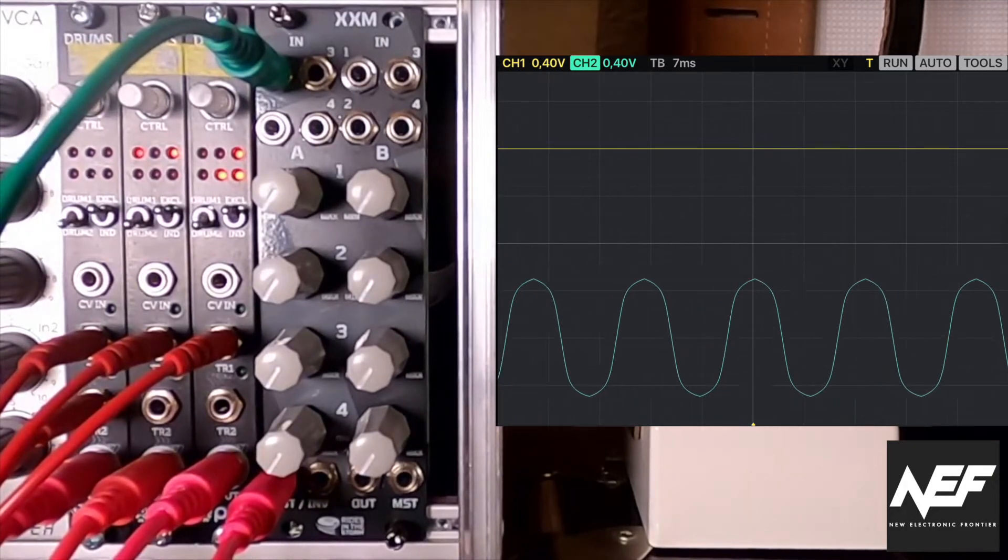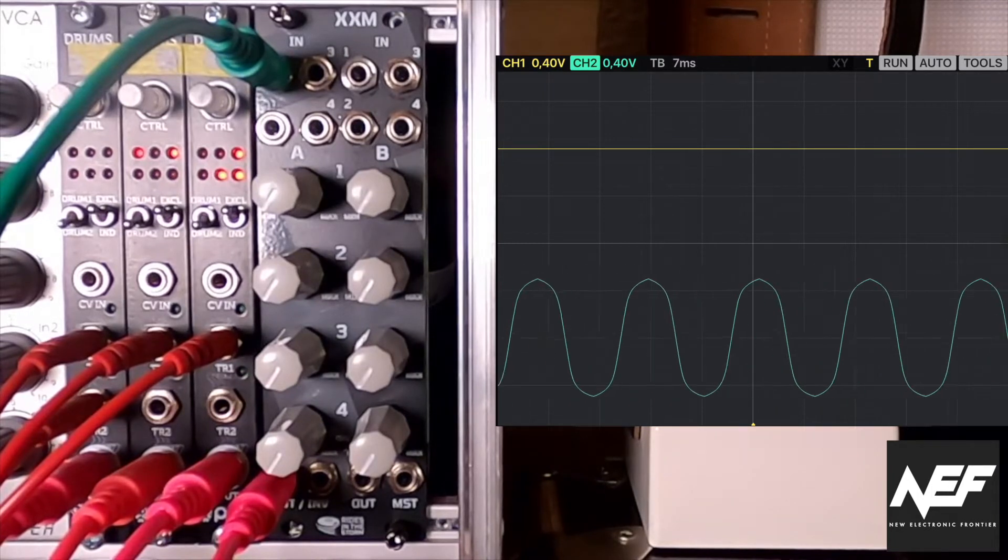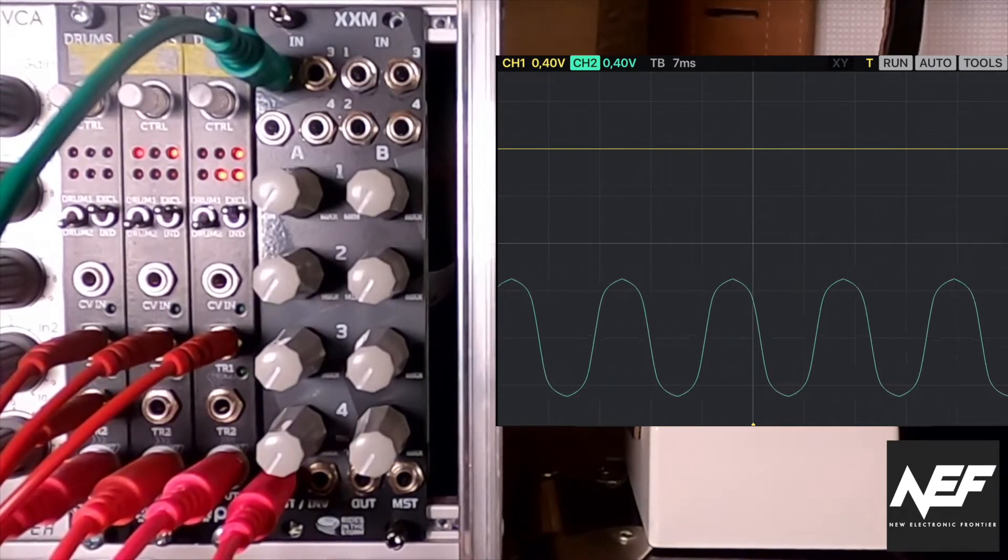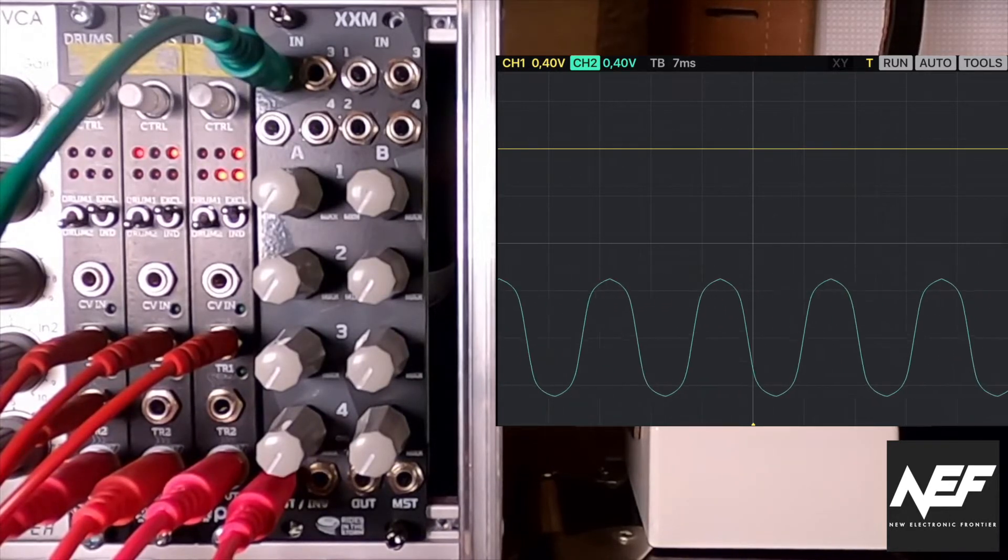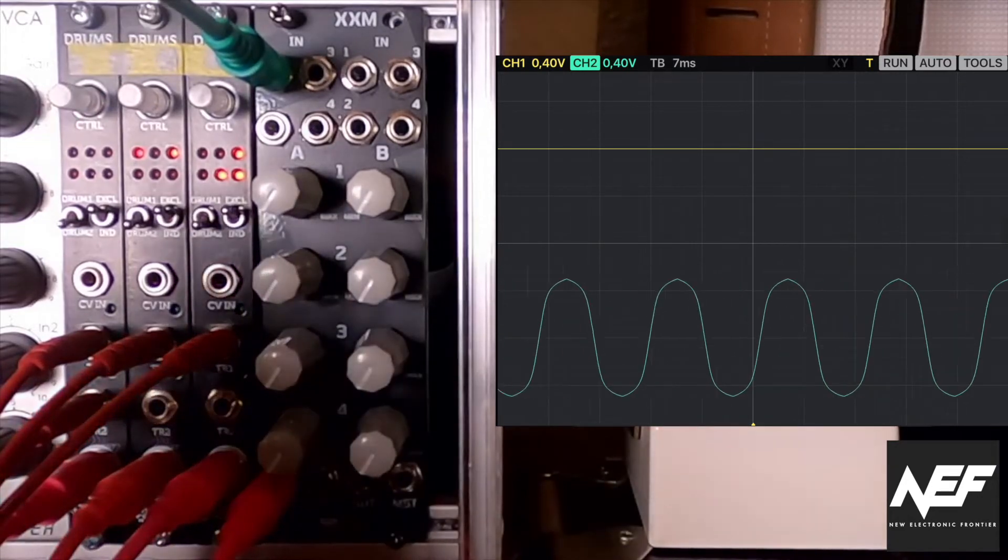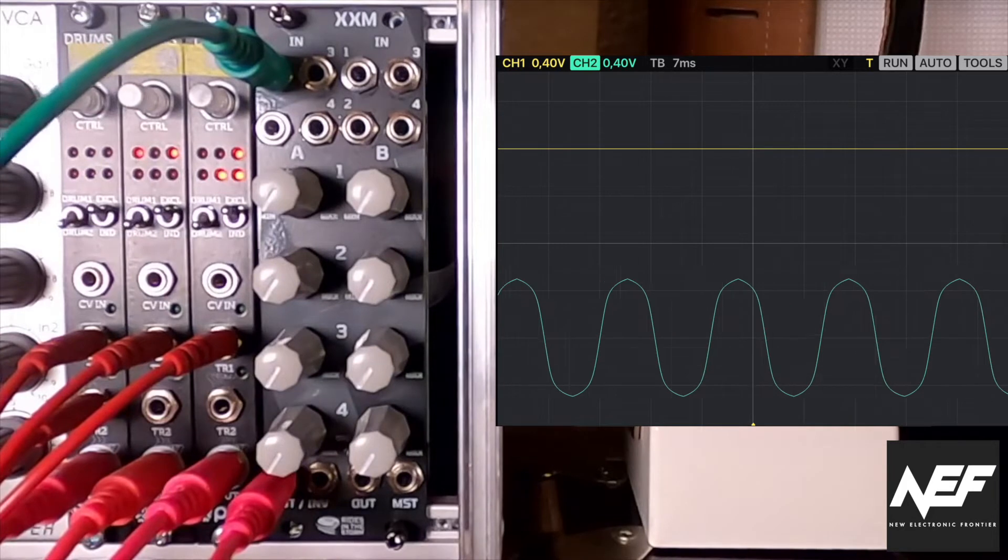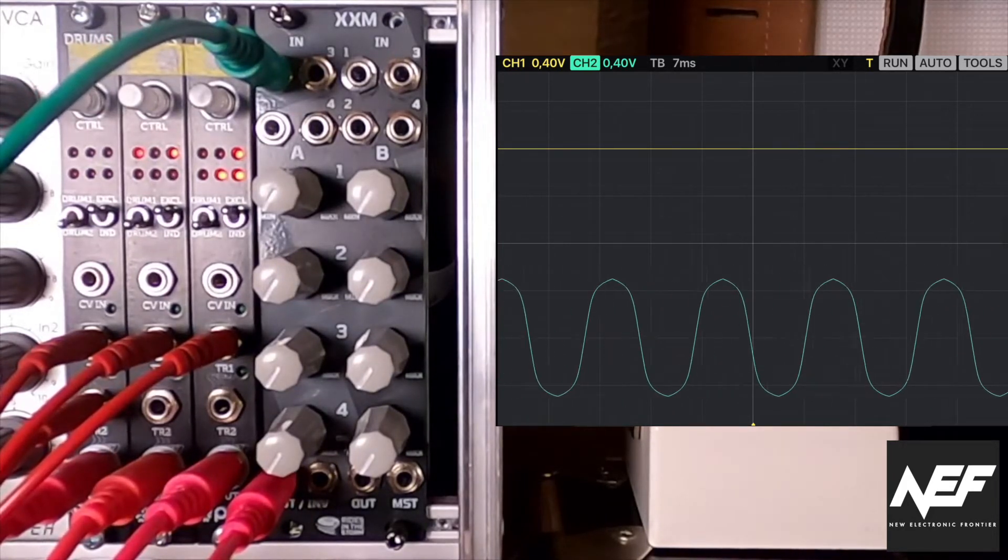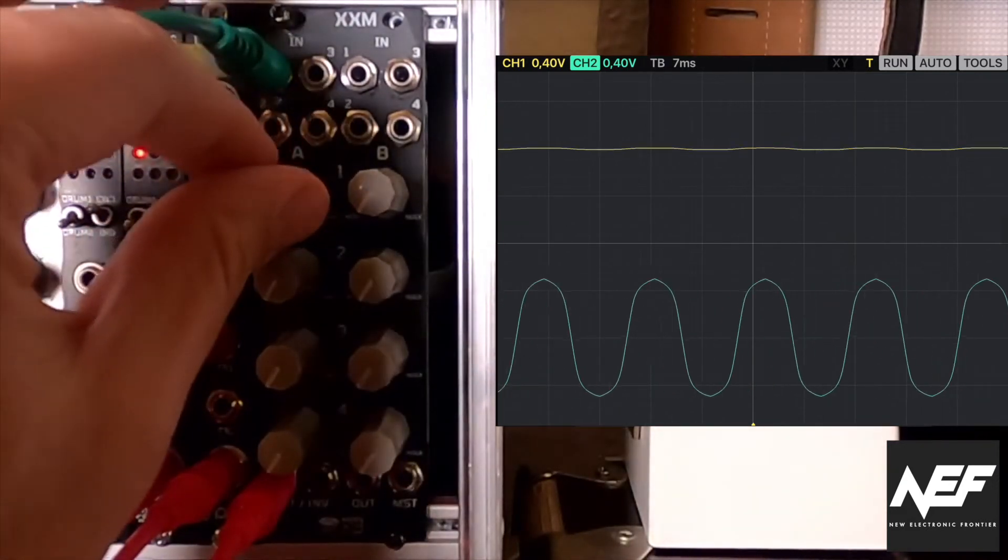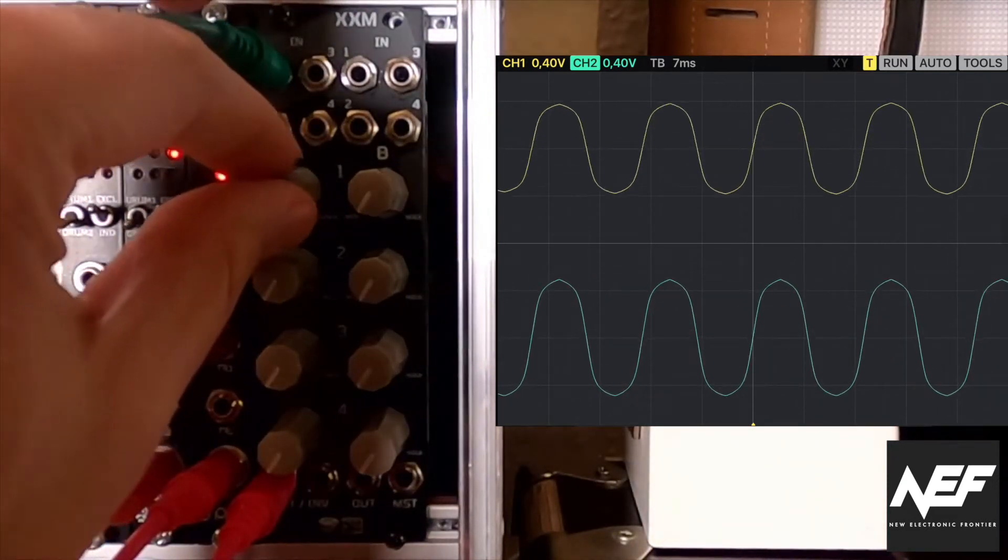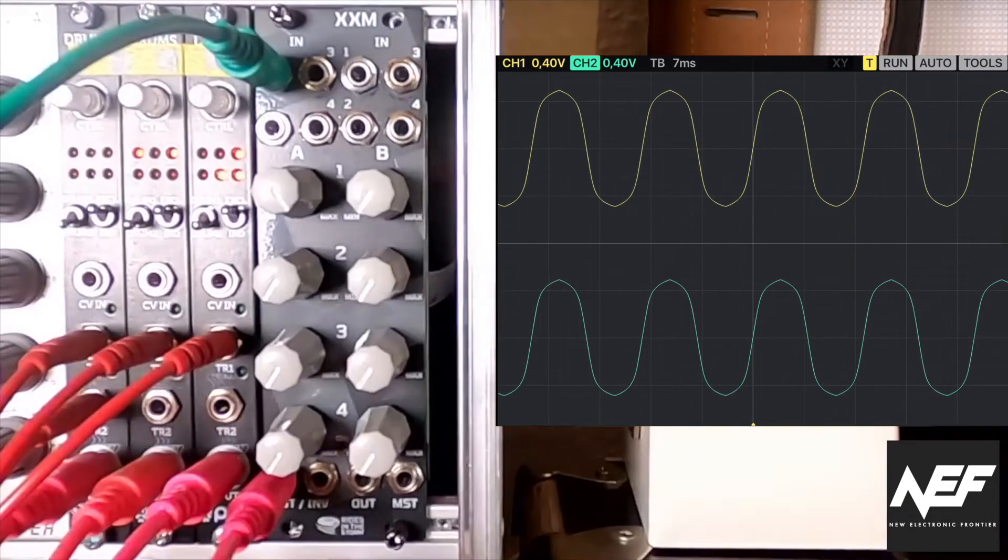From my Doepfer A-110 VCO we get a sine wave, and the sine wave is via multiple split. The original signal goes into an Expert Sleepers ES-8 - it's the green waveform you can see on the oscilloscope. The other splitted signal goes into the XXM and then into the Expert Sleepers as well - that's the yellow waveform. Let's see how this looks like.